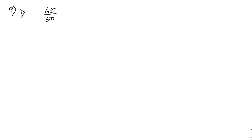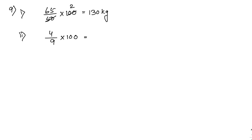Sum number 9: what percent of 50 kg is 65 kg? Write 65 by 50 into 100, which equals 130 percent. Number two: what percent of rupees 9 is rupees 4? Write 4 by 9 into 100, equal to 400 by 9, giving 44 whole 4 by 9 percent.